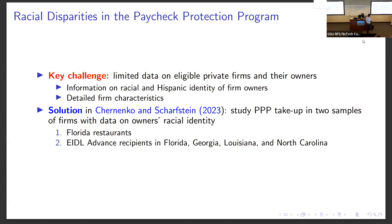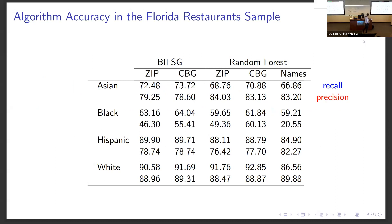We use this setting to see how self-reported race compares with predicted race. Here is a summary of the accuracy of these different algorithms within the Florida restaurants sample. The first row reports recall and the second row reports precision.